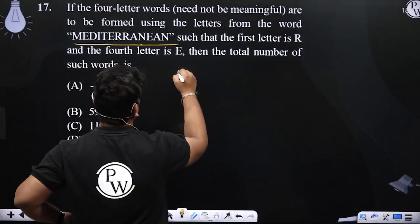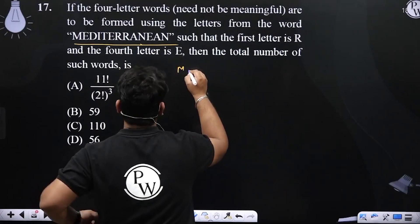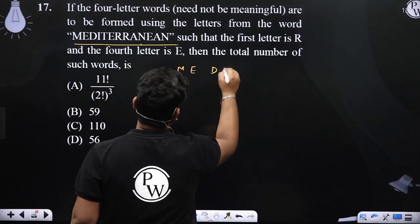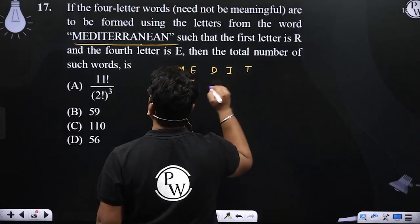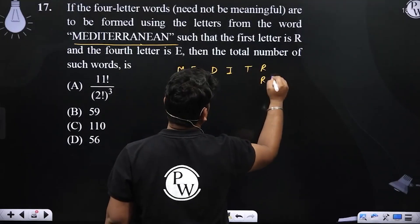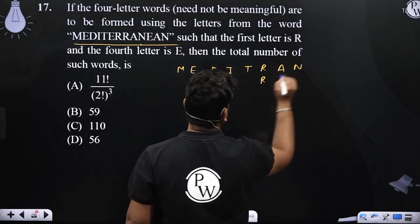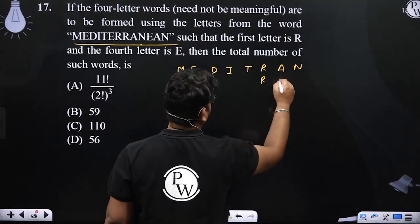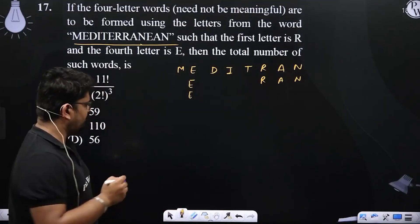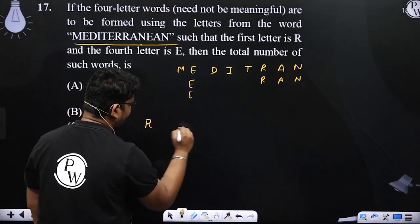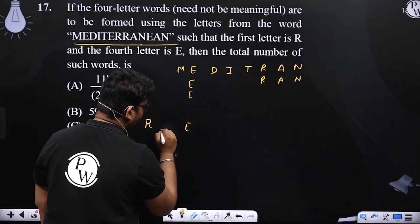First we have to write it: M-E-D-I-T-E-R-R-A-N-E-A-N. Okay, now you have four letter words. First you have to write R and the last letter is E.